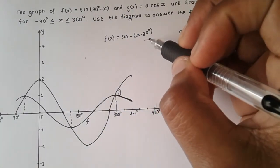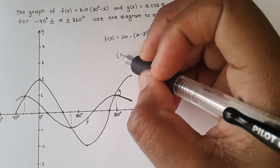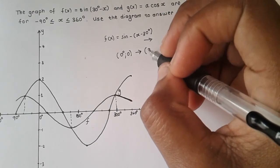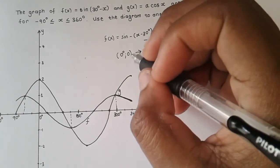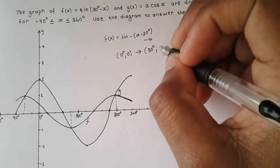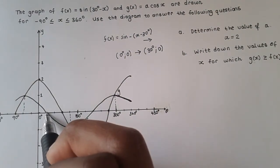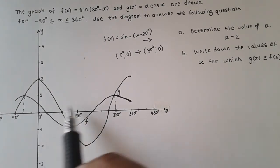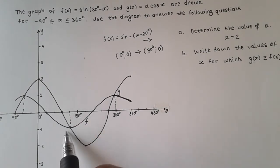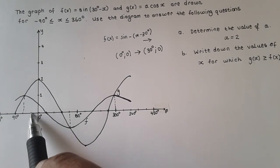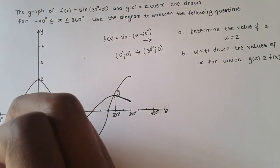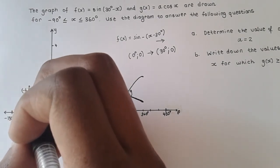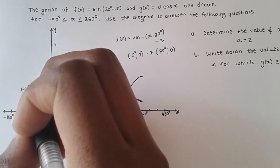We can also verify this because f(x) equals sine of (30° minus x) is the same as negative sine of (x minus 30°), which means the original sine function has been shifted 30 degrees to the right. So going from 0 leftward, we get minus 30 and minus 60. The first intersection point is at minus 60 degrees with a y-value of 1. The second intersection point is at 120 degrees with a y-value of minus 1.